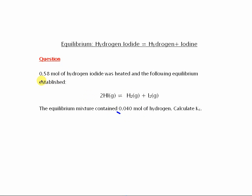And the question says, 0.58 mole of hydrogen iodide was heated and the following equilibrium established. The equilibrium actually contained 0.04 mole of hydrogen. Calculate Kc.